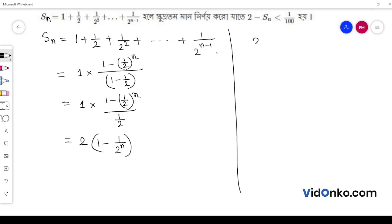We need to find that 2 minus Sn is less than 1 by 100. Putting the value, we get 2 minus 2 into 1 minus 1 by 2 to the power n is less than 1 by 100.